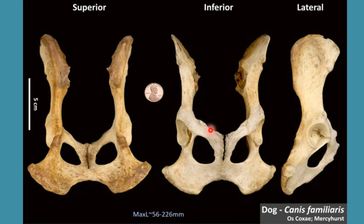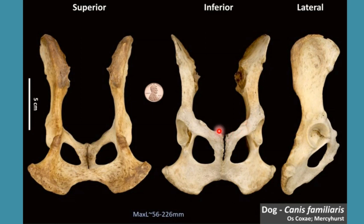The pectin is the site of attachment of abdominal muscles by the help of the prepubic tendon. As we already studied in the section of ilium, between the ileopubic eminence and auricular surface there is an arcuate line. So the arcuate line is present between the auricular surface and ileopubic eminence, while from the ileopubic eminence up to the pelvic tubercle we have the pectin.